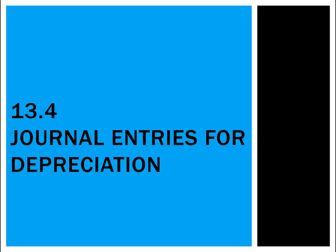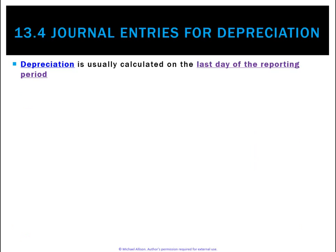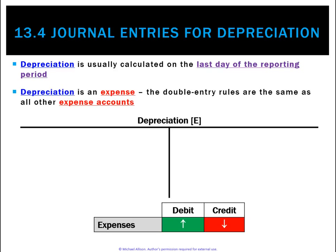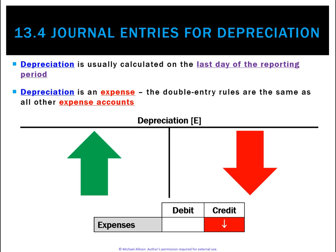In our last video we learned how to calculate straight-line depreciation, so now let's look at how we actually record it using journal entries. This is always done on the last day of the reporting period, which is called balance day. Depreciation is an expense, so its ledger has the same rules of debits and credits as other expenses — when it goes up it's a debit and when it goes down it's a credit.